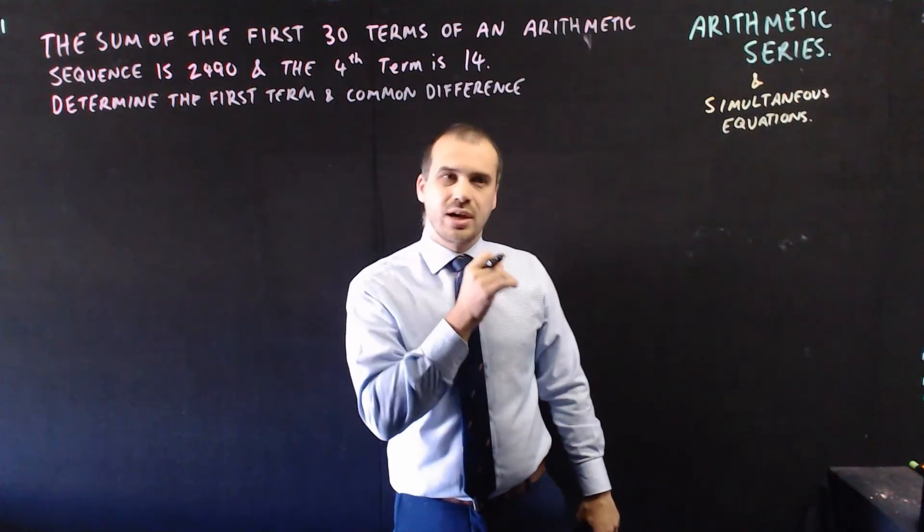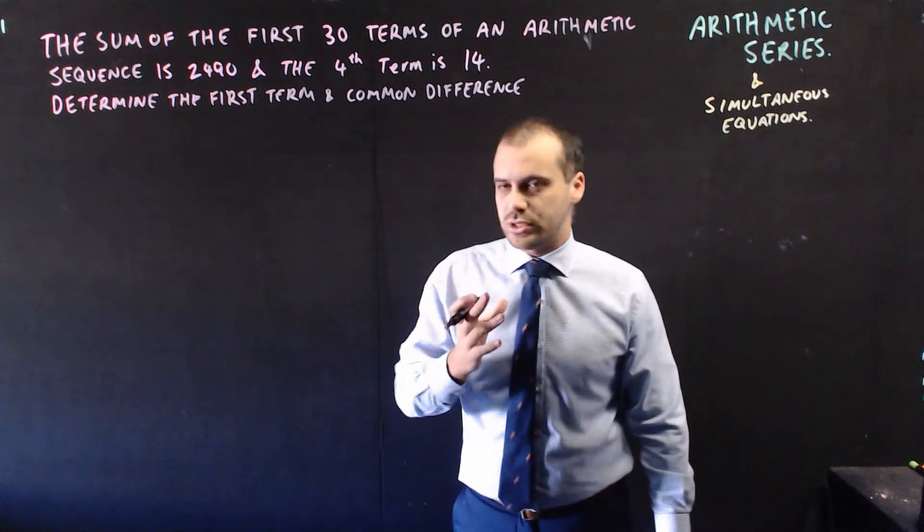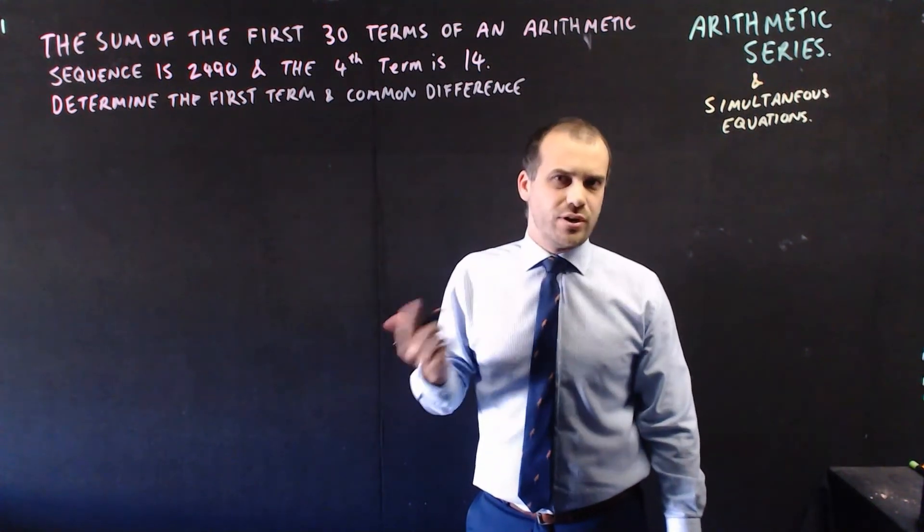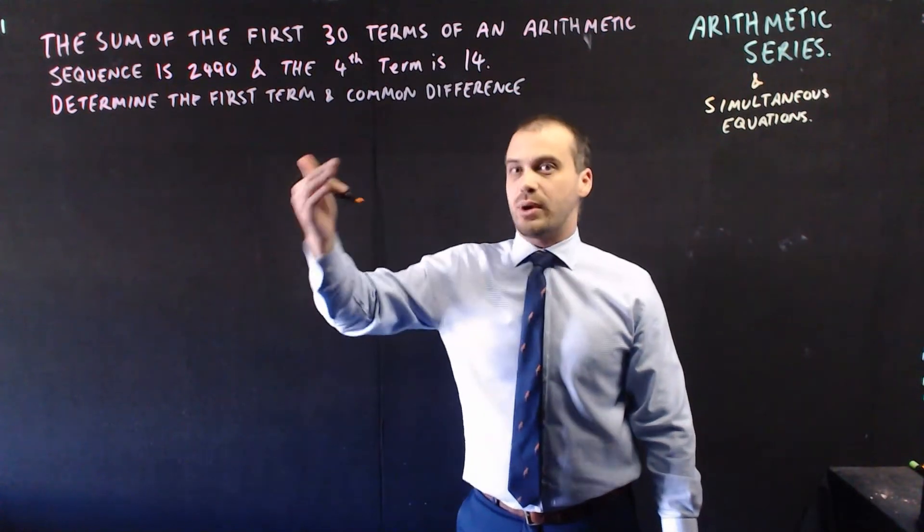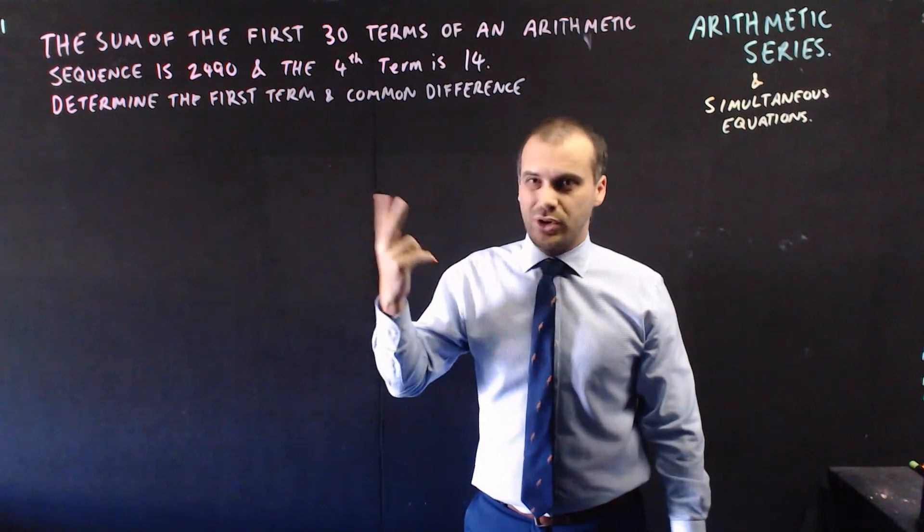So arithmetic sequences and series, there's a good chance that you'll get some sort of simultaneous equation style question, where you put the information into the formula and you get two unknown variables. So in that case you need to find a way to put it into two different formulas with those two unknown variables.